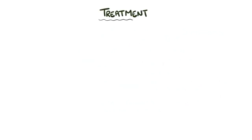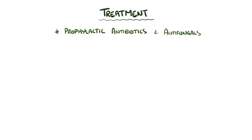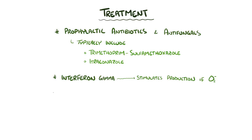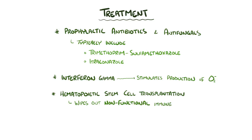Treatment of chronic granulomatous disease involves prophylactic antibiotics and antifungals targeting the most common infectious organisms — typically trimethoprim-sulfamethoxazole as well as itraconazole. In addition, interferon gamma can be given because it stimulates the production of superoxide in phagocytes. In some cases, a hematopoietic stem cell transplantation can be done to wipe out the nonfunctional immune cells and introduce new immune cells that don't have the genetic mutation.